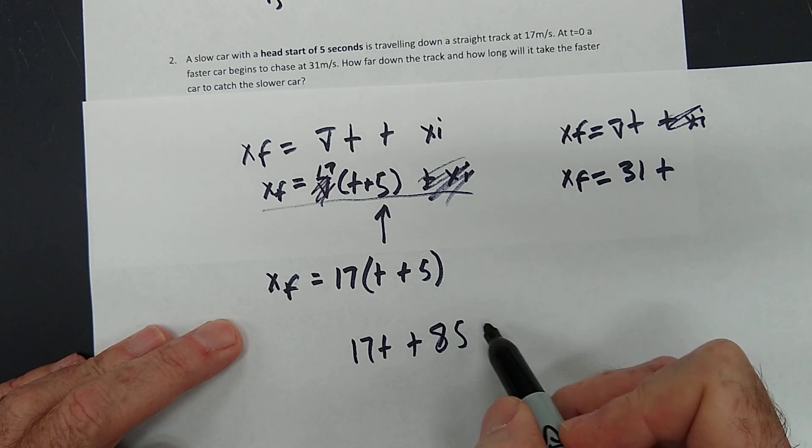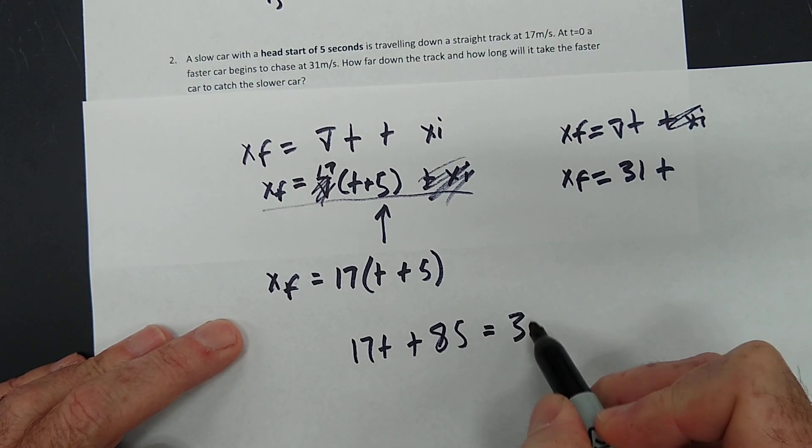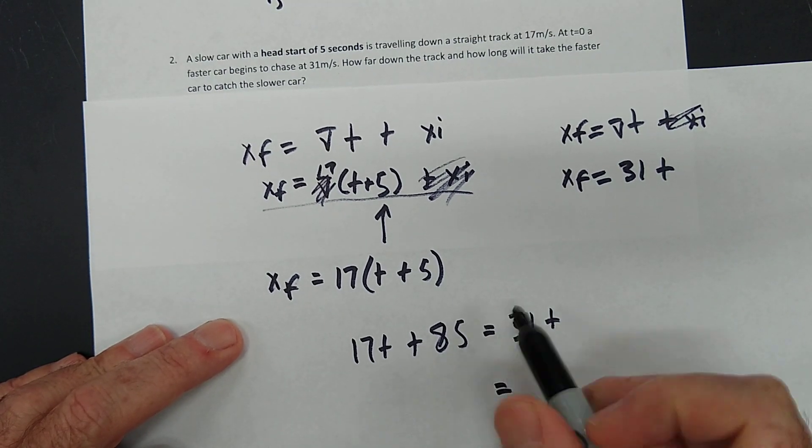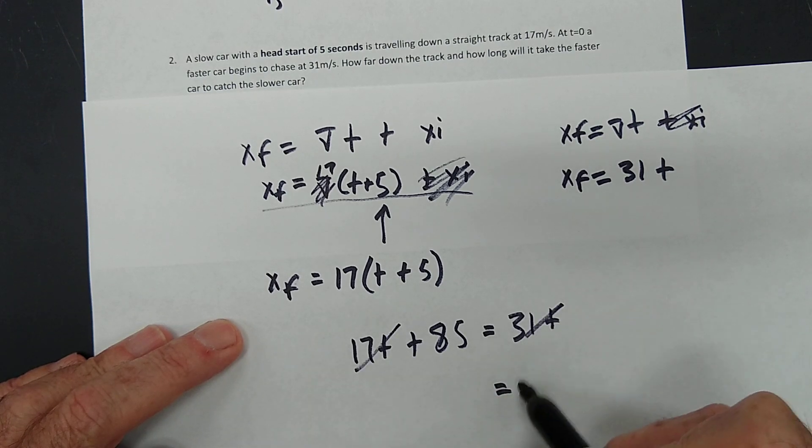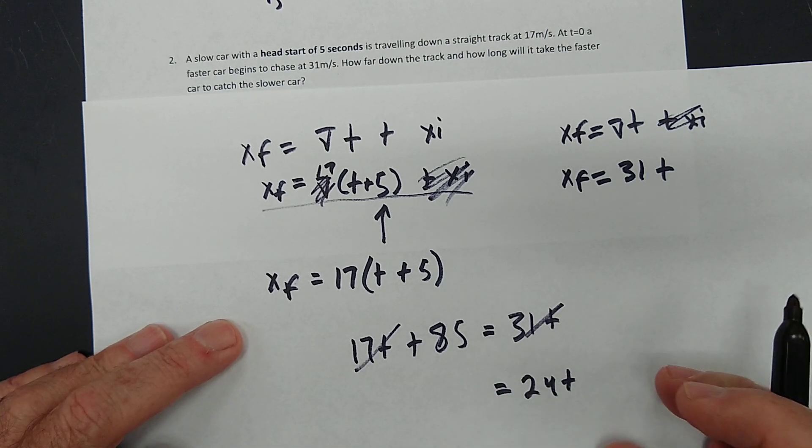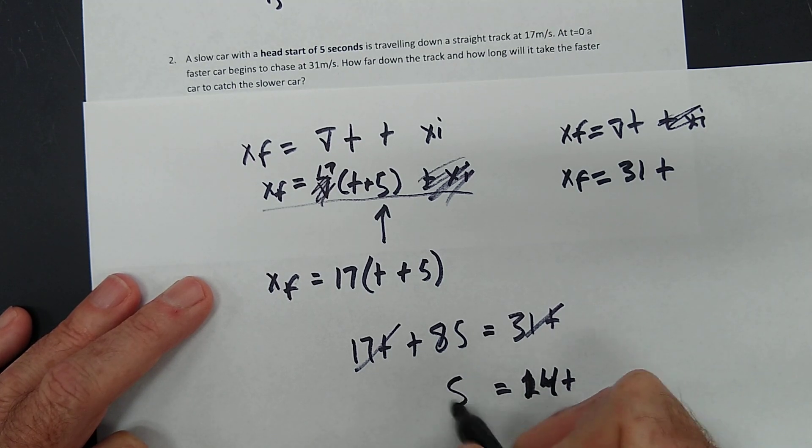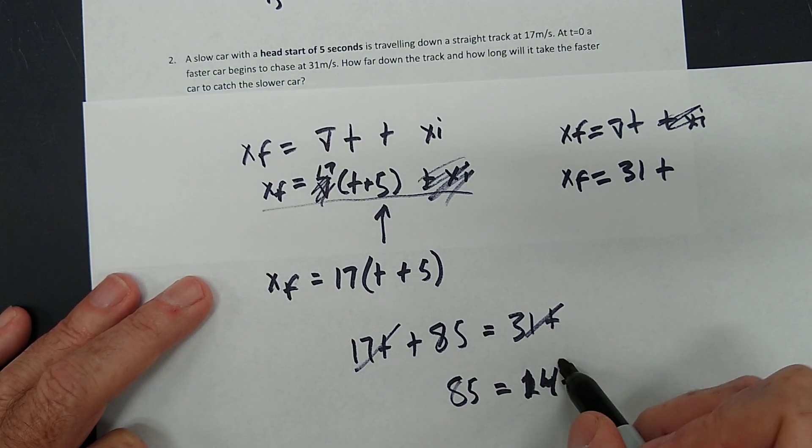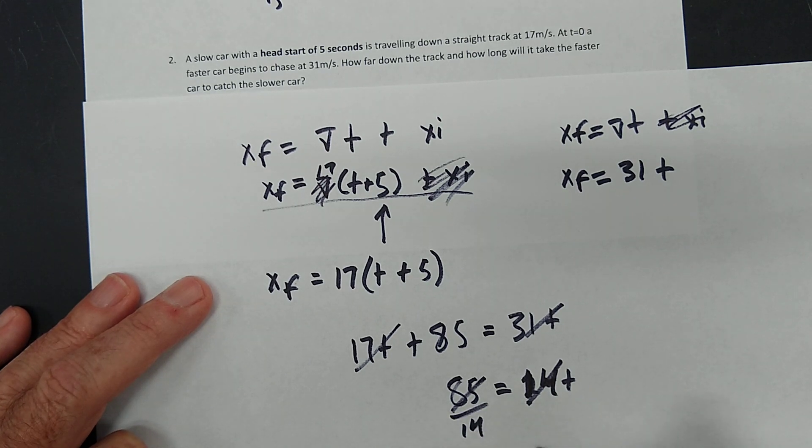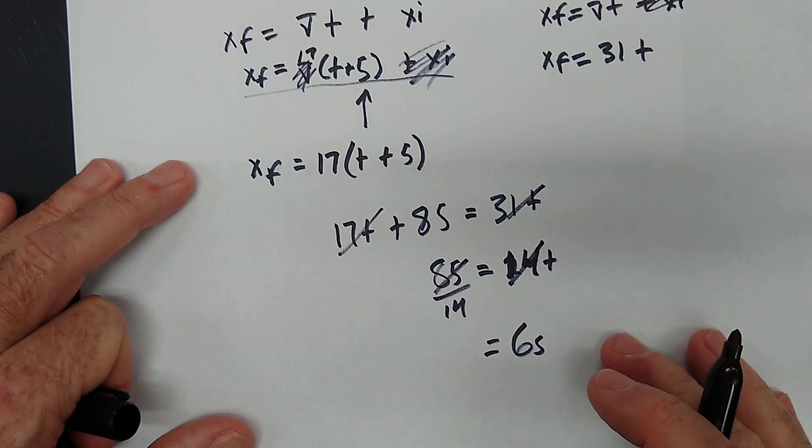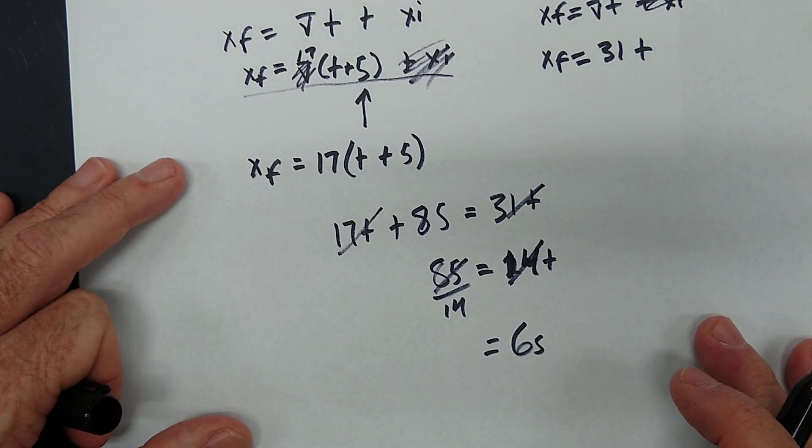Let's set it equal to the other equation, 31 T. That's going to take us down to 24 T. Excuse me, 14 T equals 85. That's going to be almost exactly 6 seconds, right? Almost exactly 6 seconds.